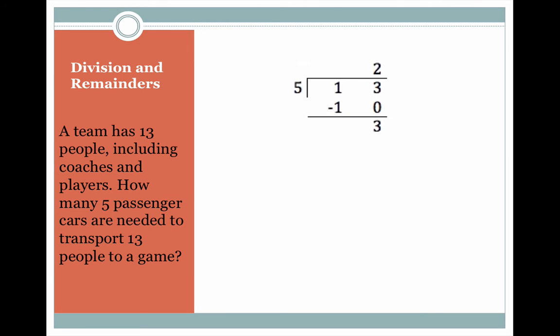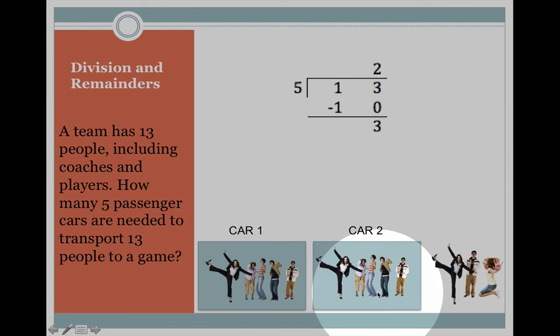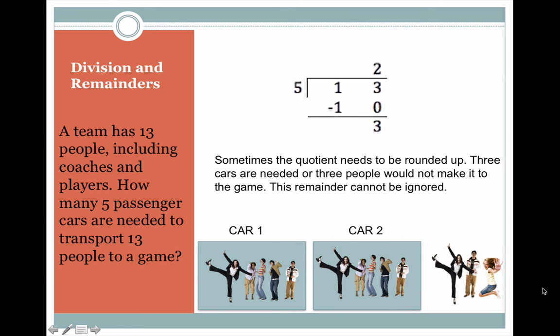Here's another example. A team has 13 people including coaches and players. How many five passenger cars are needed to transport 13 people to a game? 13 divided by five equals two with three people left over. So car one has five people, car two has five people, and there are the three people left over. Sometimes the quotient needs to be rounded up. Three cars are needed or three people would not make it to the game. This remainder cannot be ignored.